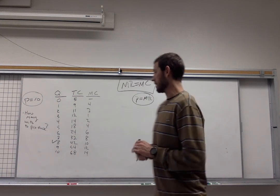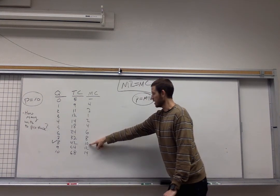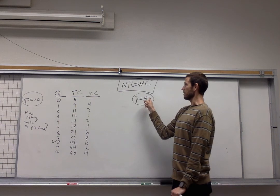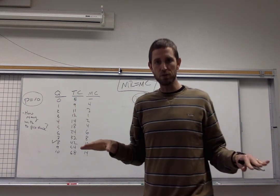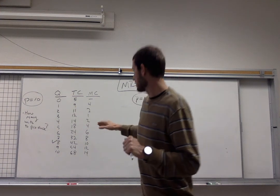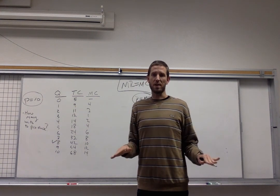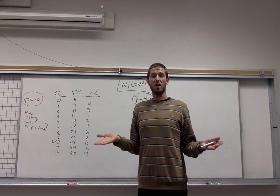At that point, for unit number eight, the marginal cost is ten and the marginal revenue is ten. So those two things are equal. So the logic is the firm should stop producing right at that particular point. Make all the units up to the eighth one and stop right there. That's how they're going to get the highest possible profit.